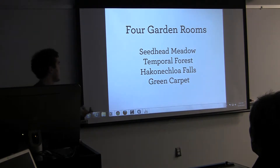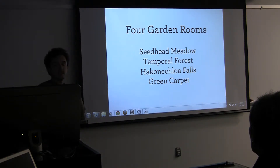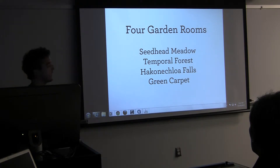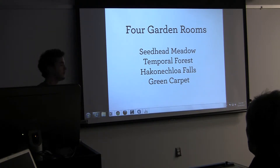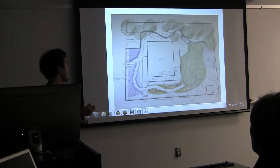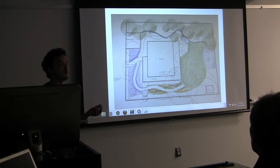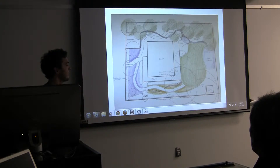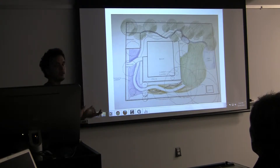In the design there are four different garden rooms. The first one I call Seedhead Meadow, then the Temporal Forest, Hakonechloa Falls, and the Green Carpet. I'm going to go through each room and talk about the sustainable features in it as well as the Wabi Sabi elements I've incorporated.